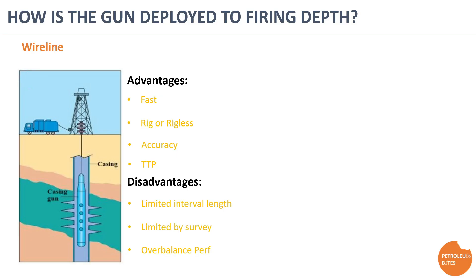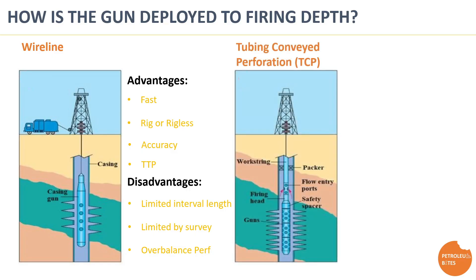Additionally, wireline requires operating overbalanced to ensure well control, which prevents proper cleanup of perforations and poses the risk of formation damage. The second method is deploying the gun on tubing, known as Tubing Conveyed Perforation, or TCP. In this method, guns are attached to tubing and run into the well using a drilling or workover rig. TCP guns offer benefits such as the ability to deploy long perforation intervals and to operate in highly deviated wells.